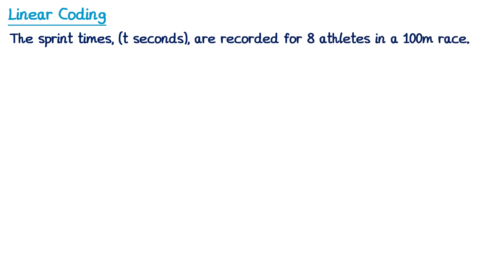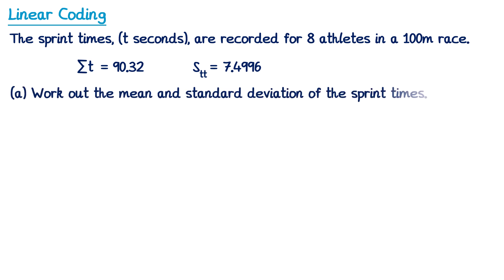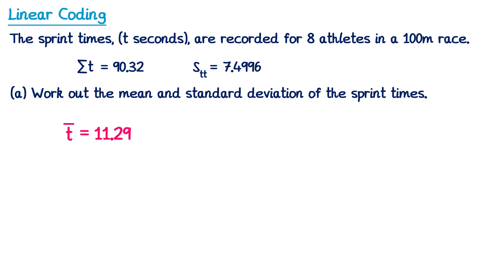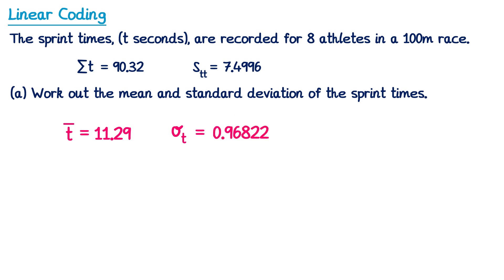Let's try one more example. The sprint times t seconds are recorded for 8 athletes in a 100m race, and we've got some summary information. For part A we need to work out the mean and standard deviation of the sprint times. So t bar equals the sum of t over n. The sum of t is 90.32, and n is 8 athletes, giving t bar equal to 11.29 seconds. For the standard deviation we use the formula with stt, substituting stt as 7.4996 and n as 8. If you type this into a calculator, you'll find that the standard deviation is 0.96822.